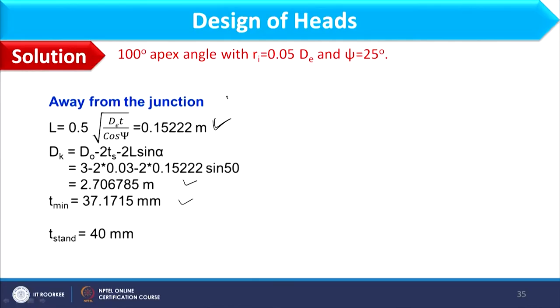For the thickness away from the junction in the knuckled conical head, the same method is used: calculate L, find DK, then compute minimum thickness. The result is 37.1715 mm; the standard thickness from table B1 is 40 mm. No corrosion allowance or 6% extra is added here, because this part away from the junction is straight.